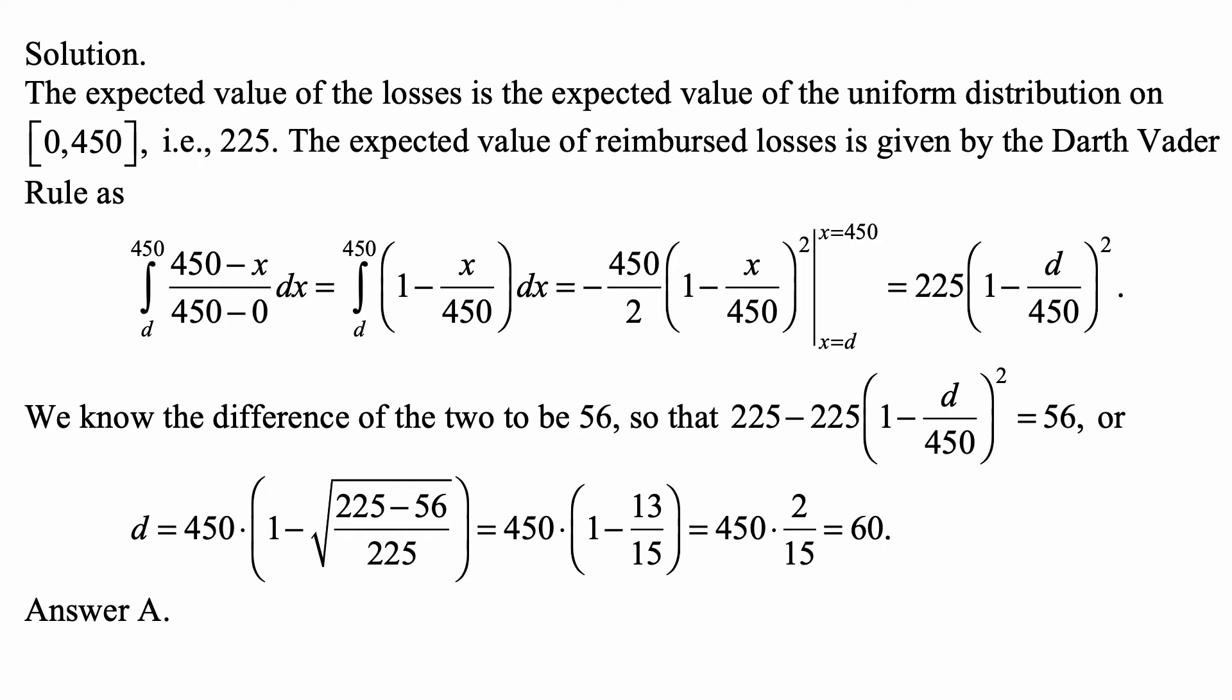It's the integral from the deductible D to 450, which is the point at which the survival function becomes 0, of the survival function of the random value of the loss, which is simply the fraction of the interval from 0 to 450 that is to the right of x, which is (450 - x) / (450 - 0) dx. That's the integral from D to 450 of (1 - x/450) dx. And that's equal to -450/2 times (1 - x/450) squared. That's the function whose derivative we have under the integral.